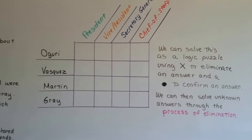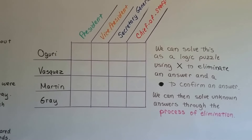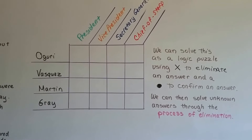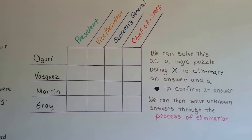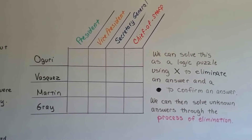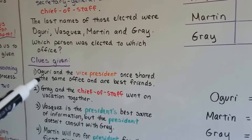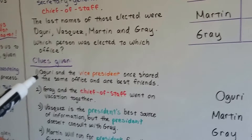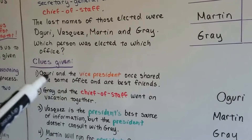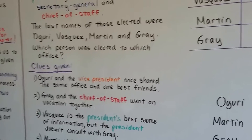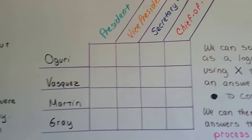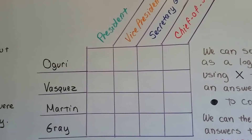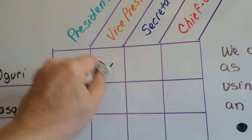We can solve this as a regular logic puzzle. We'll use an X to eliminate an answer — put an X in the box — and use a dot to confirm an answer. We can solve unknown answers through the process of elimination. The first clue says Oguri and the Vice President once shared the same office and are best friends. If they shared an office, then Oguri can't be the Vice President — he shared the office with the Vice President. So we put an X for Oguri under Vice President.